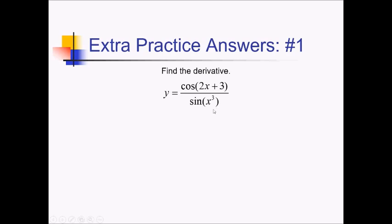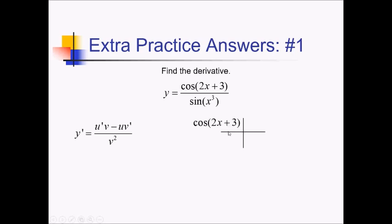The only thing I can think of is that there's a way to simplify these trig functions, but we don't have the same things inside, so quotient rule it is. That's u'v minus uv' all over v squared. Setting up the box and ribbon to organize all of this — we've got my numerator, cosine of 2x plus 3, and denominator, sine of x cubed.